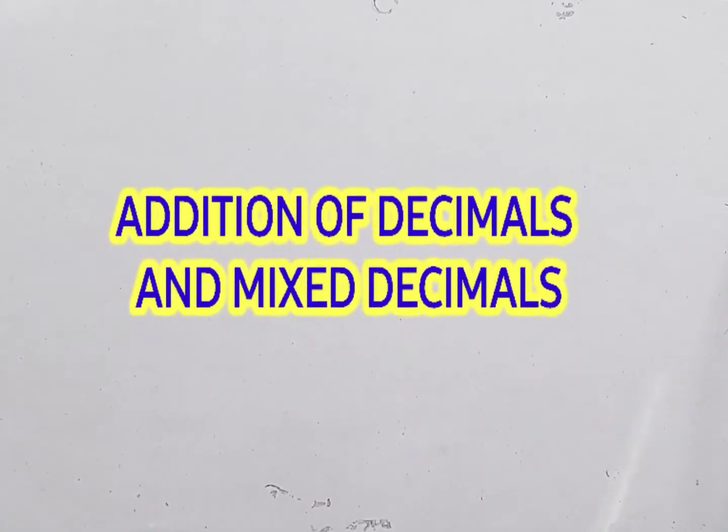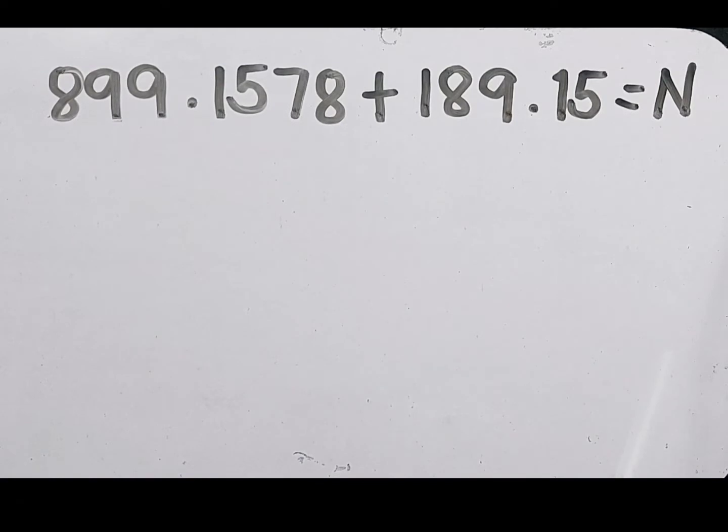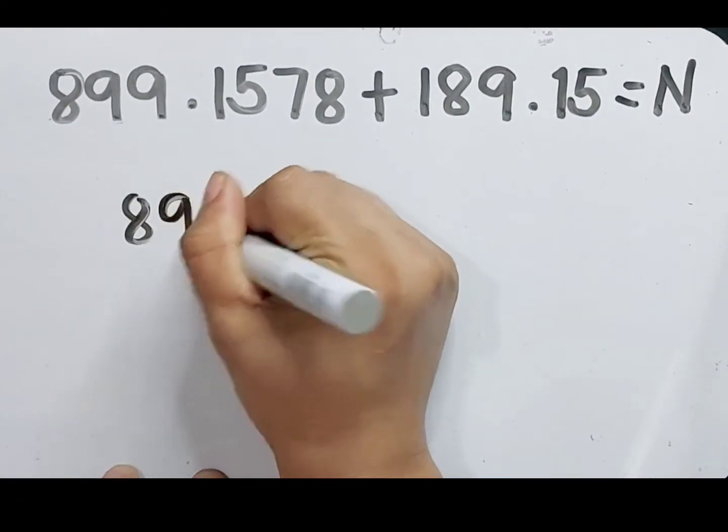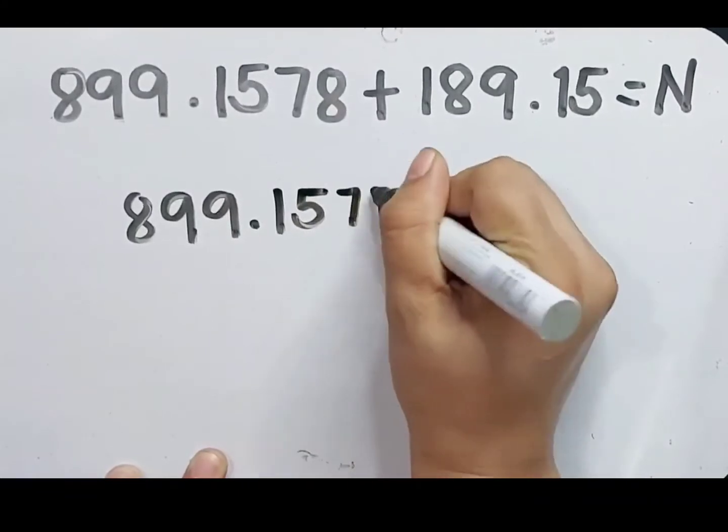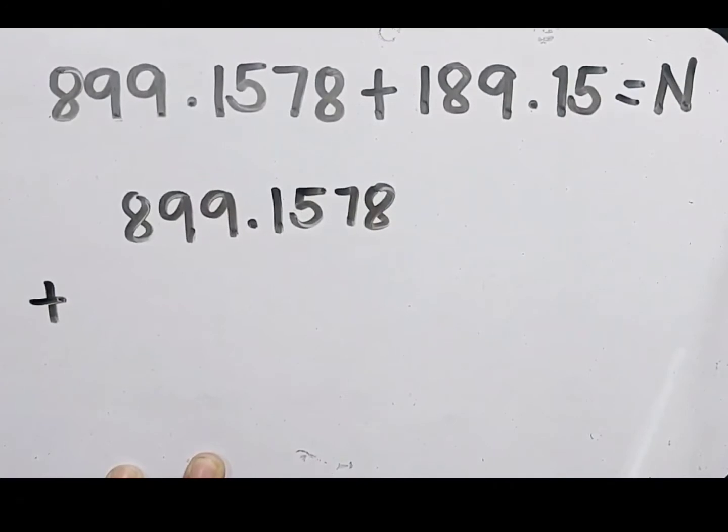Let's have first adding decimal and mixed decimals. For our first example, we have 899.1578 plus 189.15 equals N. So the first step is to write the numbers in a column. We have 899.1578 plus 189.15.